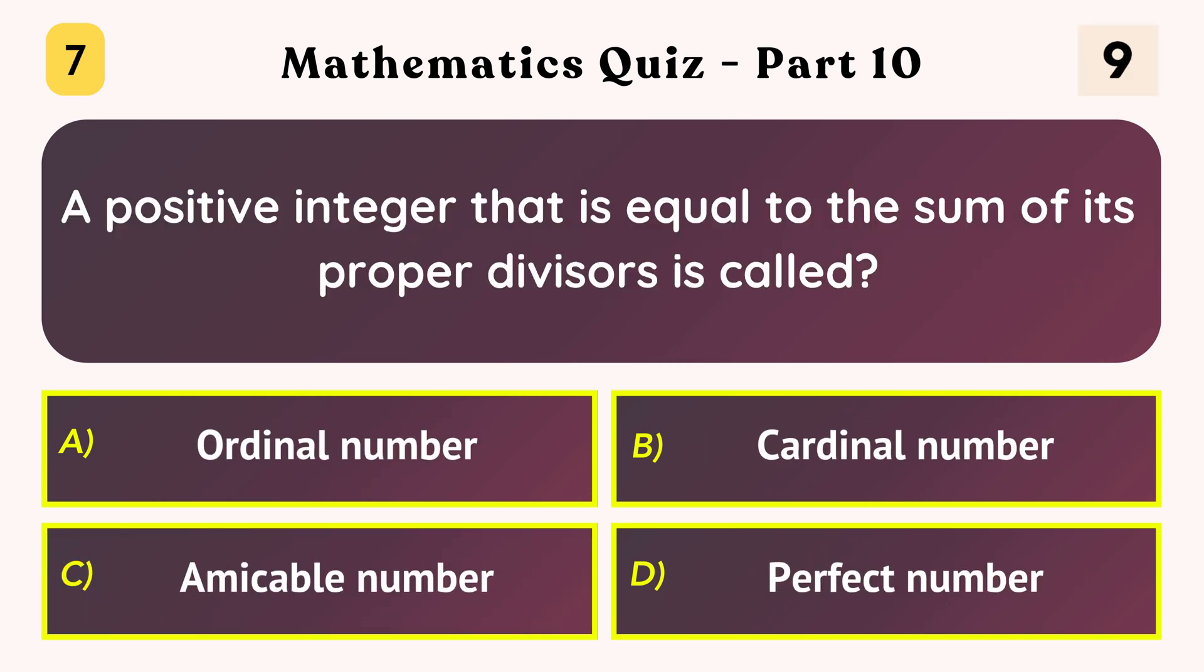A positive integer that is equal to the sum of its proper divisors is called? Perfect number.